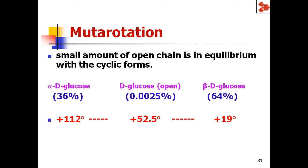This phenomenon of change in optical rotation of sugar molecules or monosaccharides is called mutarotation. Mutarotation means the change in the specific optical rotation of a sugar solution without affecting the other properties of the compound. For D-glucose at equilibrium, the mutarotation value is plus 52.5 degrees.